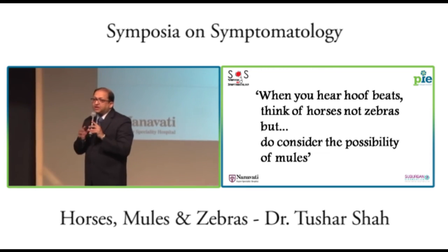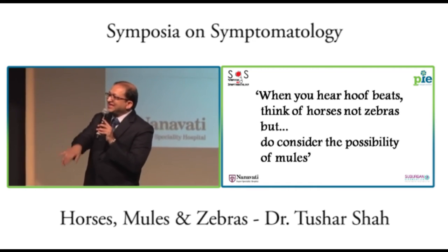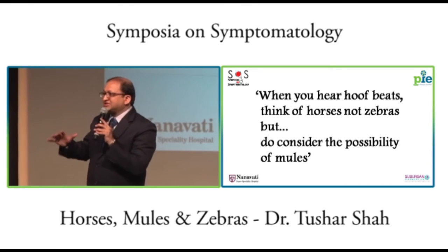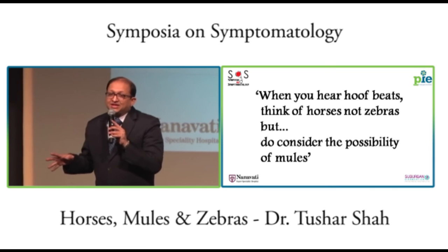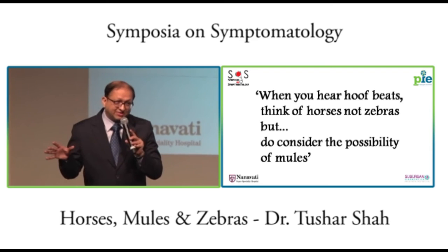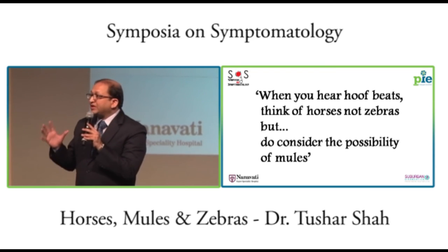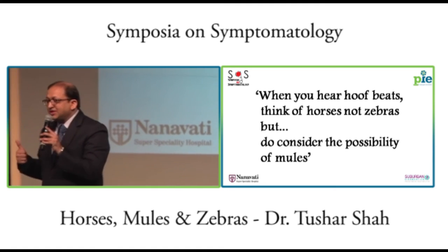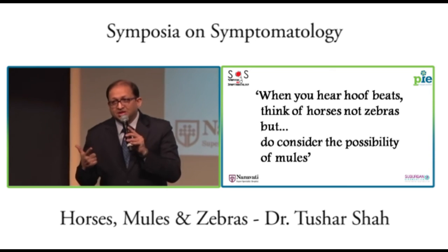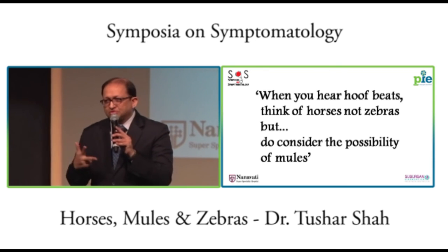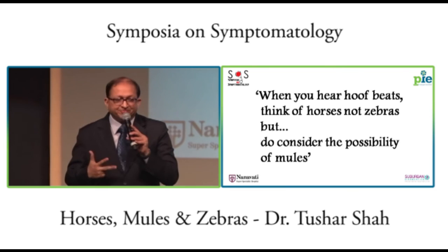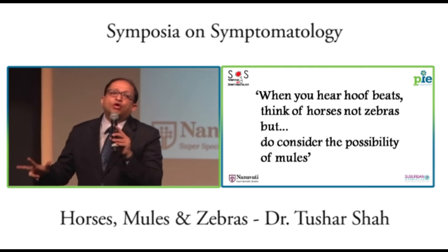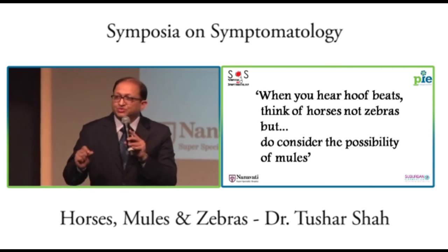Epigastric pain in a person who consumed alcohol the previous night — what is the horse? Alcoholic gastritis, right? But if you stop at that, you have killed the patient sometimes. So what mules will you think of? Pancreatitis, myocardial infarction — and do you know that gallstone colic can also occur in the epigastrium? Gallstone disease — that is your mule. Those are the mules you cannot afford to miss if a patient comes with epigastric pain.